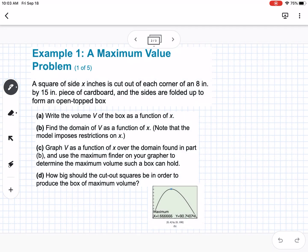Okay, so example one says a maximum value problem. It says a square of side x inches is cut out of each corner of an 8 inch by 15 inch piece of cardboard. So if we have, here's our cardboard, this is 8, this is 15, so we're cutting out a square from every corner that is going to be x by x.